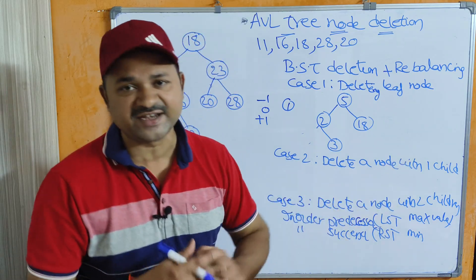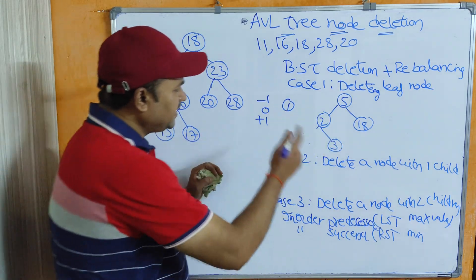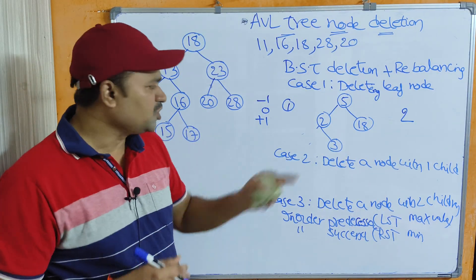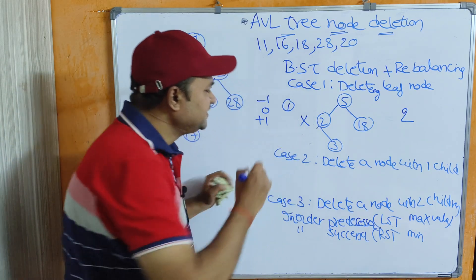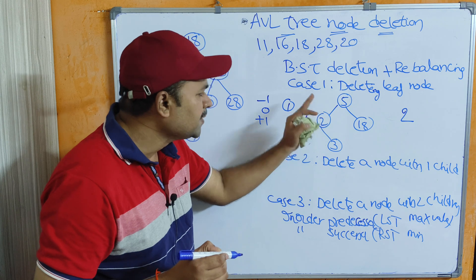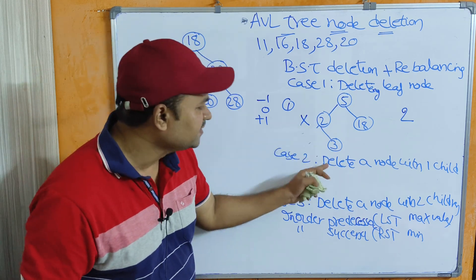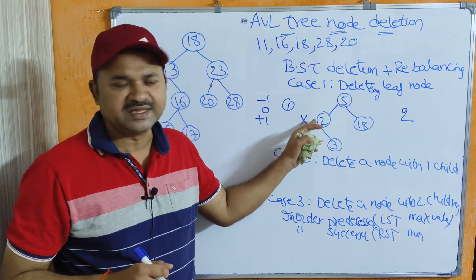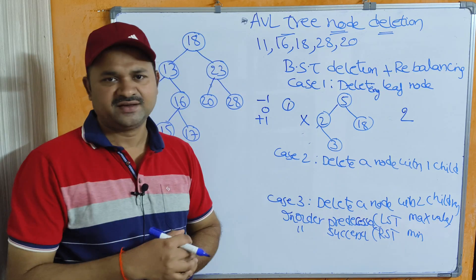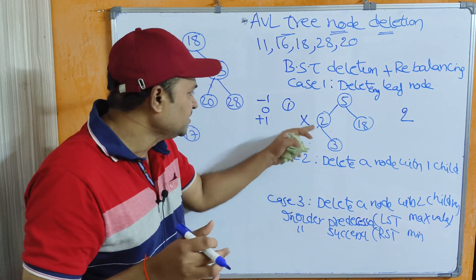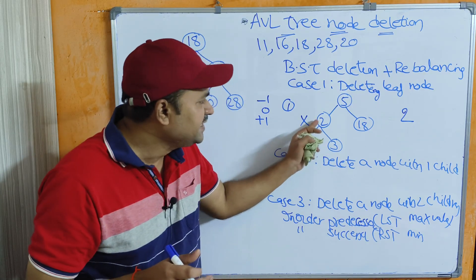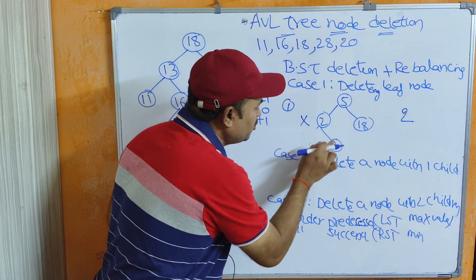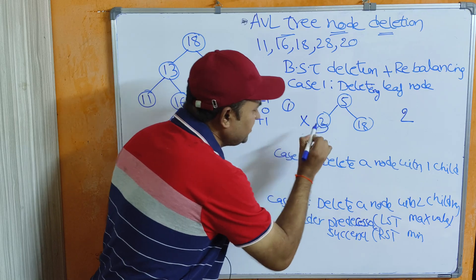The next case is deleting a node with 1 child. If we want to delete node 2, which has 1 child, then we have to replace node 2 with its child. We have to attach the deleted node's child to the deleted node's parent. So simply replace this deleted node with its child — replace 2 with 3.